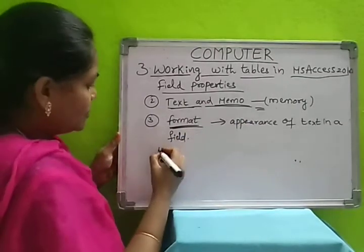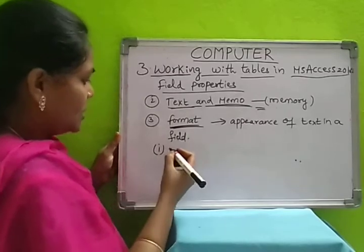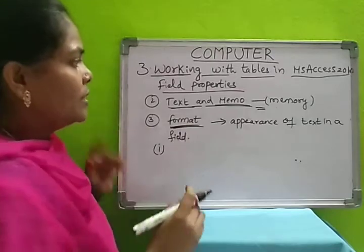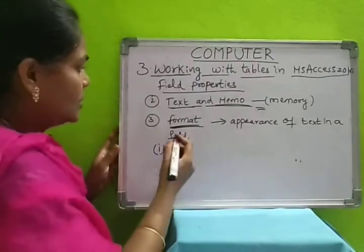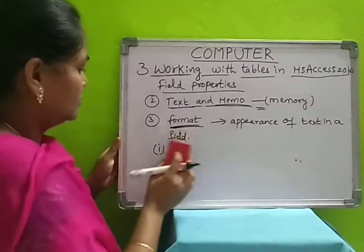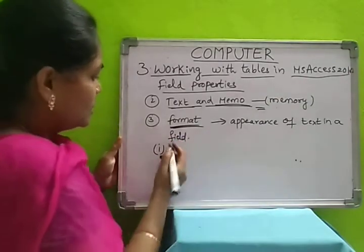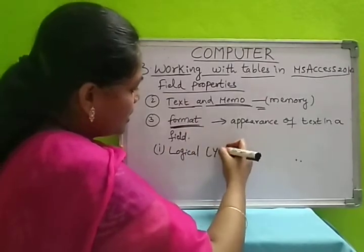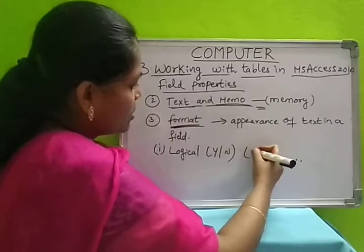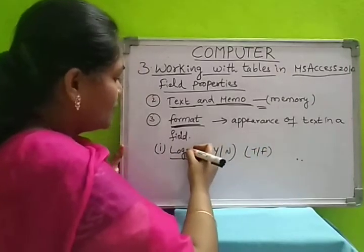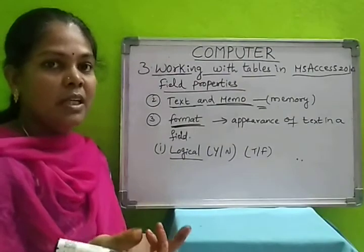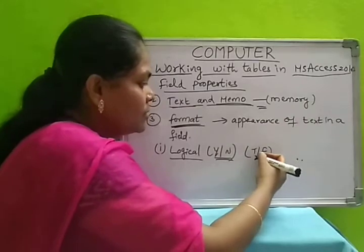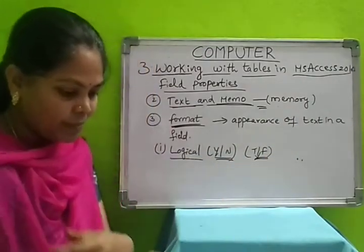For logical format, what is the result you will get? Yes/No, or true or false. Only one will display — yes/no, or true or false. That format you will mention in the logical format. For number and currency, how we want to display the number — in which format. For this, we can display as general numbers, currency with decimal points, or with a euro symbol.